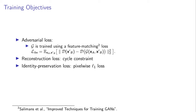To ensure that the generator preserves the non-age-related characteristics of the input image, we utilize a cycle consistency loss, which ensures that the input image can be reconstructed from the synthetic one. Finally, to further retain the high-frequency, identity-specific information of the input image, we use a pixel-wise L1 loss between the translated images and the inputs.